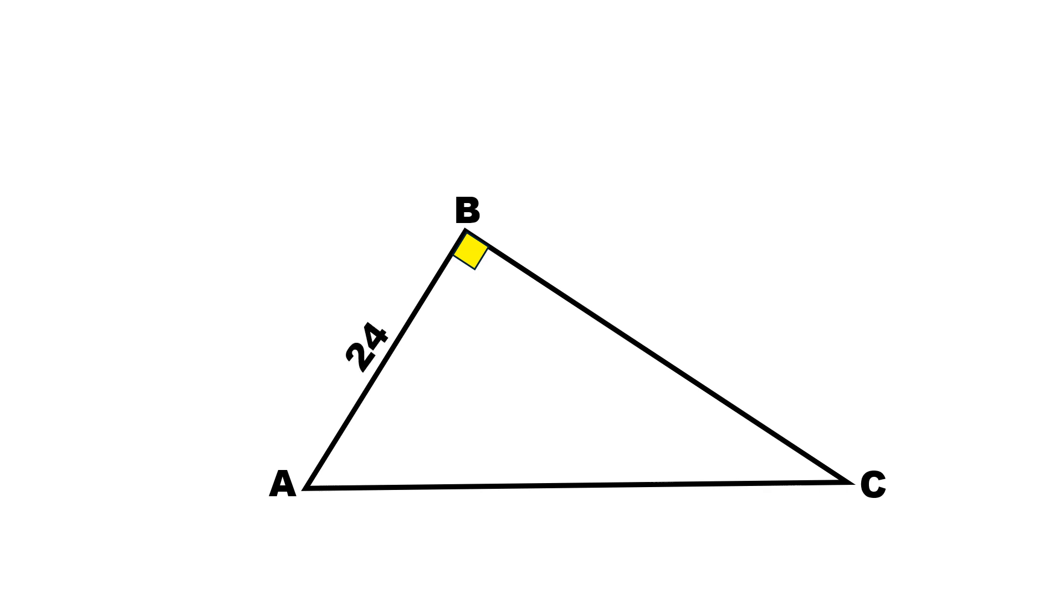If AB length is 24 units and we have a point D on the line BC, and the length BD is 7 units.